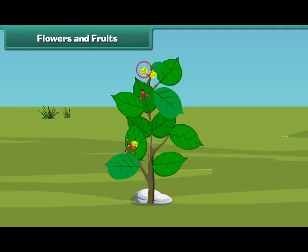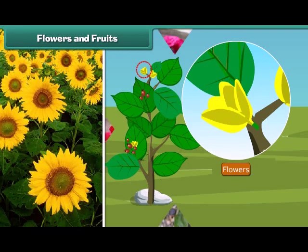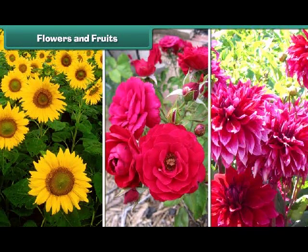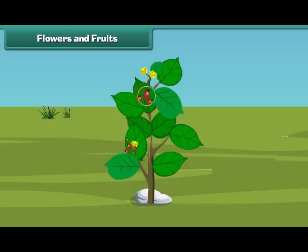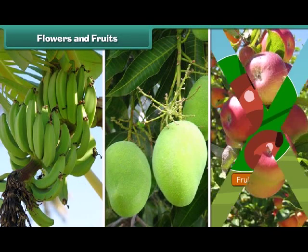Friends, now let us know about the most attractive and most beautiful part of the plant. Yes, that is the flower. Flowers are of different colors and types like sunflower, rose and dahlia and so on. I know that most of you also like fruits. Fruit is the juicy part of the plant. Fruits come in different shapes, sizes and colors like banana, mango, apple and oranges.